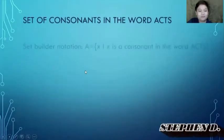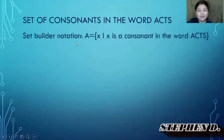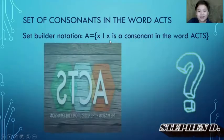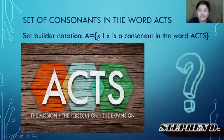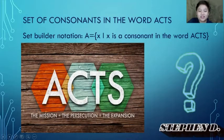The set builder notation is: A = {x | x is a consonant in the word CLVE}. Here, x is represented by c, t, and s, which are consonants in the word.